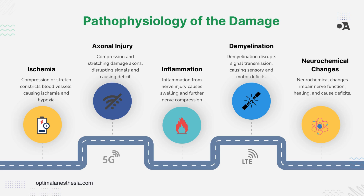Moving on to axonal injury. The axon is the nerve's electrical wiring, responsible for sending signals to and from the brain. If a nerve is compressed or stretched, this wiring can get damaged — like trying to use a frayed electrical cord, it just doesn't work right. A damaged axon disrupts the nerve's ability to transmit signals, causing a range of issues from tingling sensations to loss of movement. This initial damage can also set off a chain reaction, worsening the nerve injury over time.